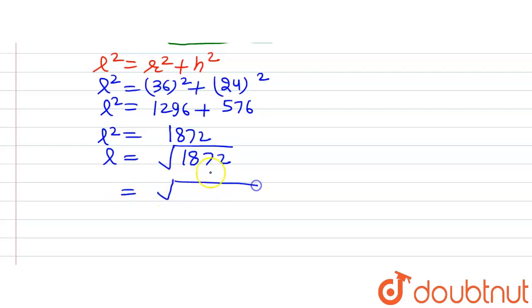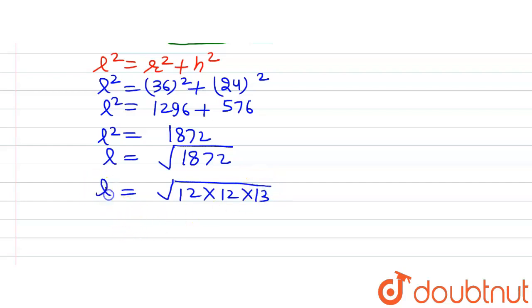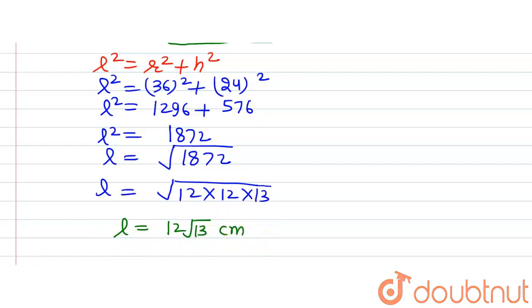Representing 1872 as a product of its factors: 1872 = 12 × 12 × 13. Since 12 forms a pair, it comes out of the square root, giving the slant height l = 12√13 cm. This is the answer to the second part of the question.